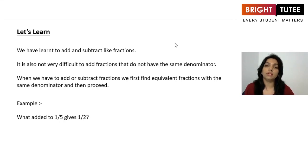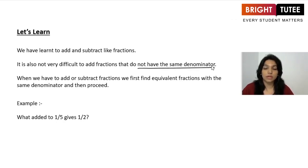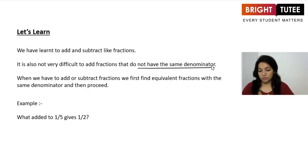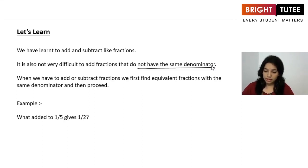For subtraction with like fractions, take the bigger numerator away from the smaller one over the denominator. Now, if you are working with unlike fractions - fractions where you don't have the same denominator - you convert the given denominators to the same denominator by working out equivalent fractions.